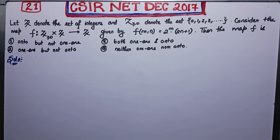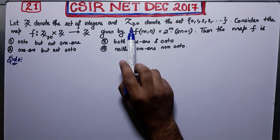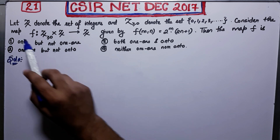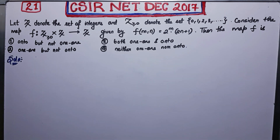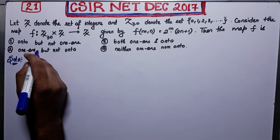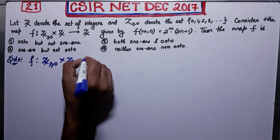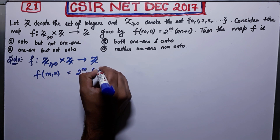Welcome back guys. I am here with you to solve problem number 21 of CSIR NET December 2017. Let z denote the set of integers and z greater than or equal to 0 — this denotes the set of positive integers including 0. Consider the map f(m,n) given by 2 to the power m times (2n + 1).